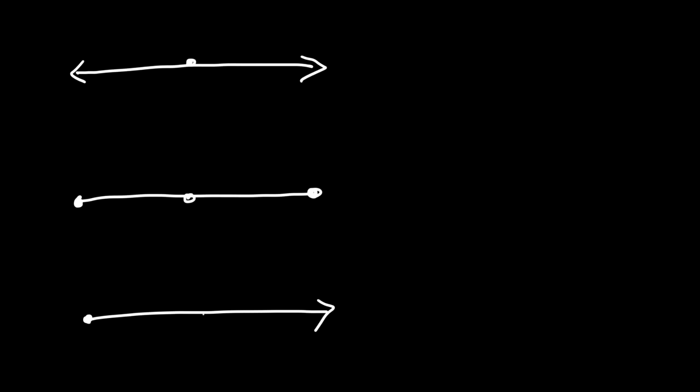In this lesson we're going to talk about midpoints and angle bisectors. Let me give you three pictures and I want you to determine which one is a midpoint — is it point A, B, or C? A midpoint is a point that divides a segment into two congruent segments.